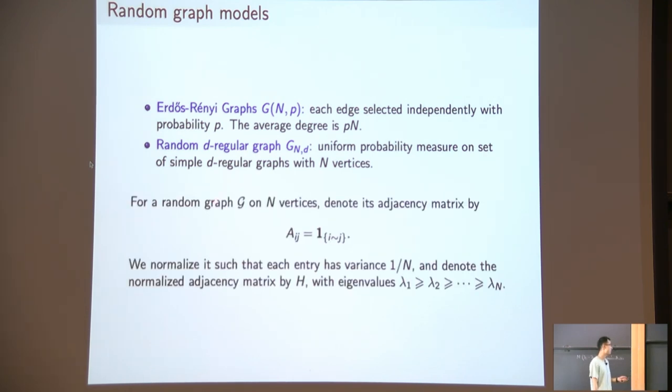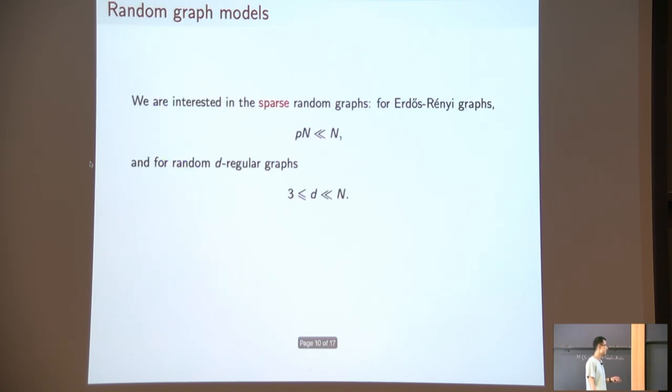If we're given a random graph G, it can be represented by its adjacency matrix A. A_ij equals 1 if and only if there's an edge between vertex i and j. We also normalize this matrix such that it has variance 1/n, the same as the Gaussian orthogonal ensemble, and denote the normalized adjacency matrix by H. Because the graph G is a random graph, this matrix H is a random matrix, so we can use the tools from random matrix theory to study this adjacency matrix. In the special case, if p is like 1/2, the adjacency matrix is a random matrix. Each entry is either 0 or 1 with probability 1/2. From their theorem, we can conclude the bulk universality is true in this case.